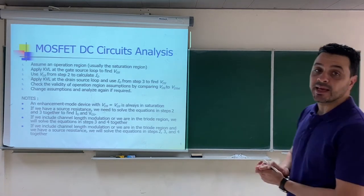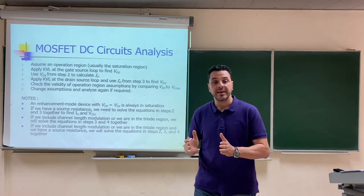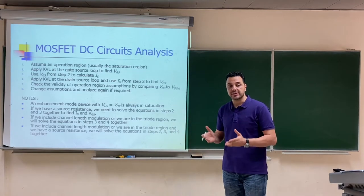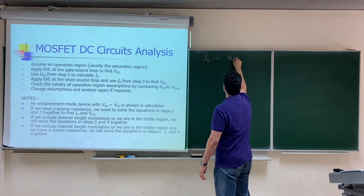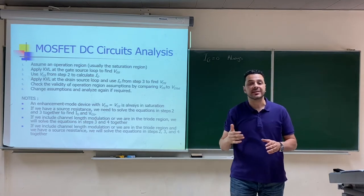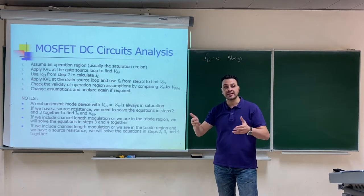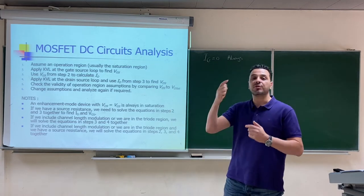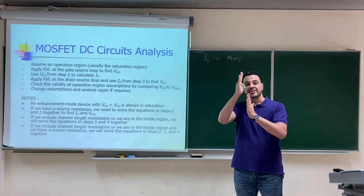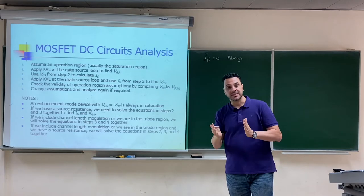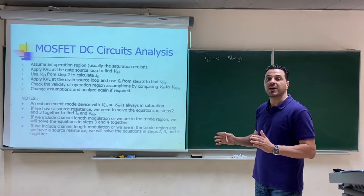In this video we are going to discuss the DC analysis of MOSFET circuits. The first thing to notice about the MOSFET is that the gate is always open circuit in the DC analysis, which means that the gate current always equals zero. This will make our solutions much easier than the solutions of the bipolar junction transistor, because in the BJT we have three currents: I_base, I_collector, I_emitter. But here we have only one current — the current between the drain and source — while I_gate is always zero, because there is an insulation between the gate and the body of the transistor.